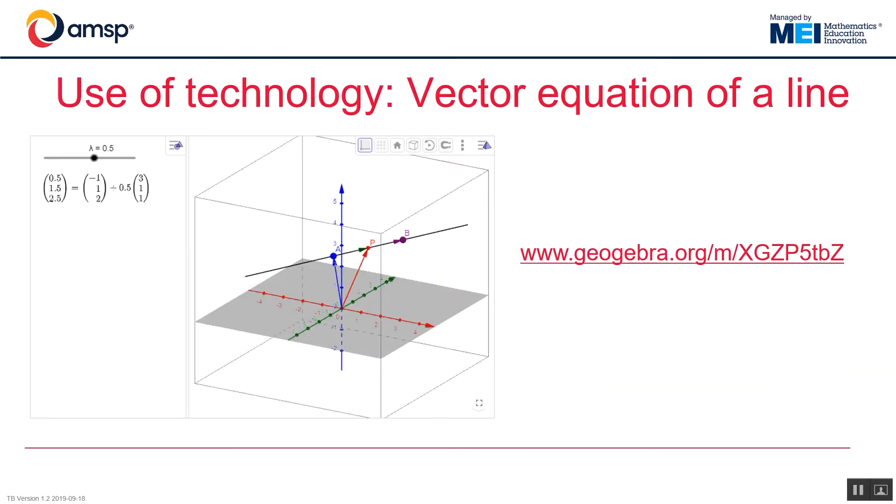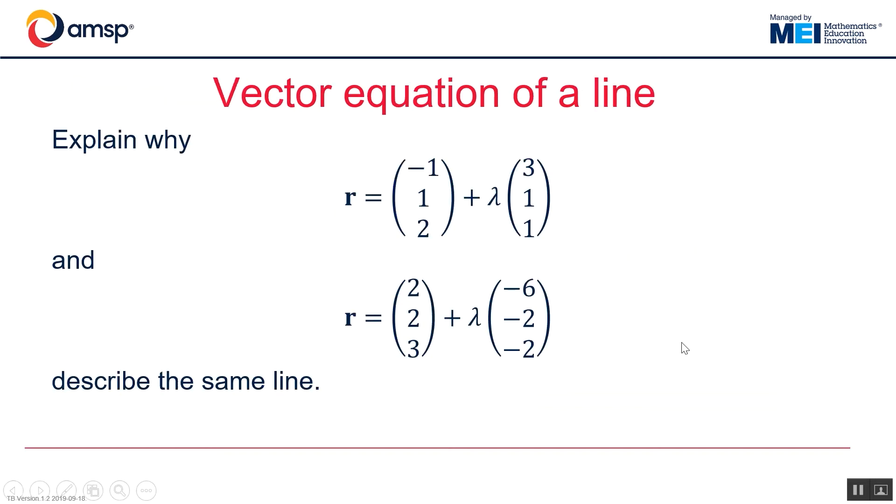And you can have a play around with that and think about how you might use it with your students, whether you'd use it at the front of the class or get them to explore it. But it allows us to then start asking questions like this. Can the students explain why (-1, 1, 2) + Lambda(3, 1, 1) and (2, 2, 3) + Lambda(-6, -2, -2) describe the same line.